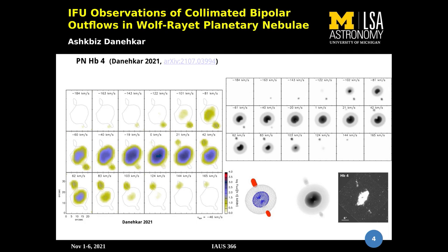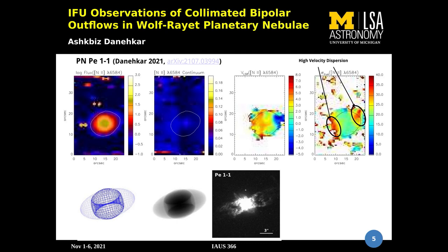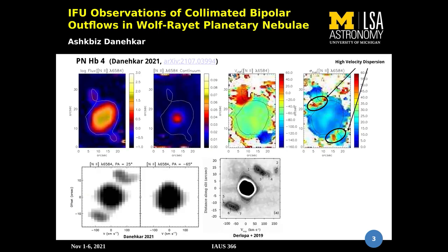Bipolar outflow has been found in many of these objects, while their main structure also has elliptical morphology based on what we see in IFU observations. Some objects also show shock excitations, and there is some evidence for accelerations in point-symmetric structures of one object.